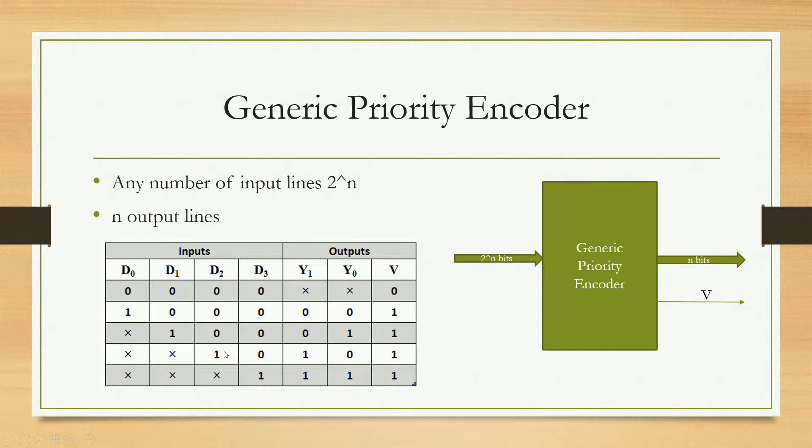Now if D3 is 0 and D2 is 1, and we don't care the status of D0 and D1, at the output we will report index 2 along with the valid signal high. Now if both D3 and D2 are 0 and D1 is high, at the output we will report 0 1, that means index number 1.